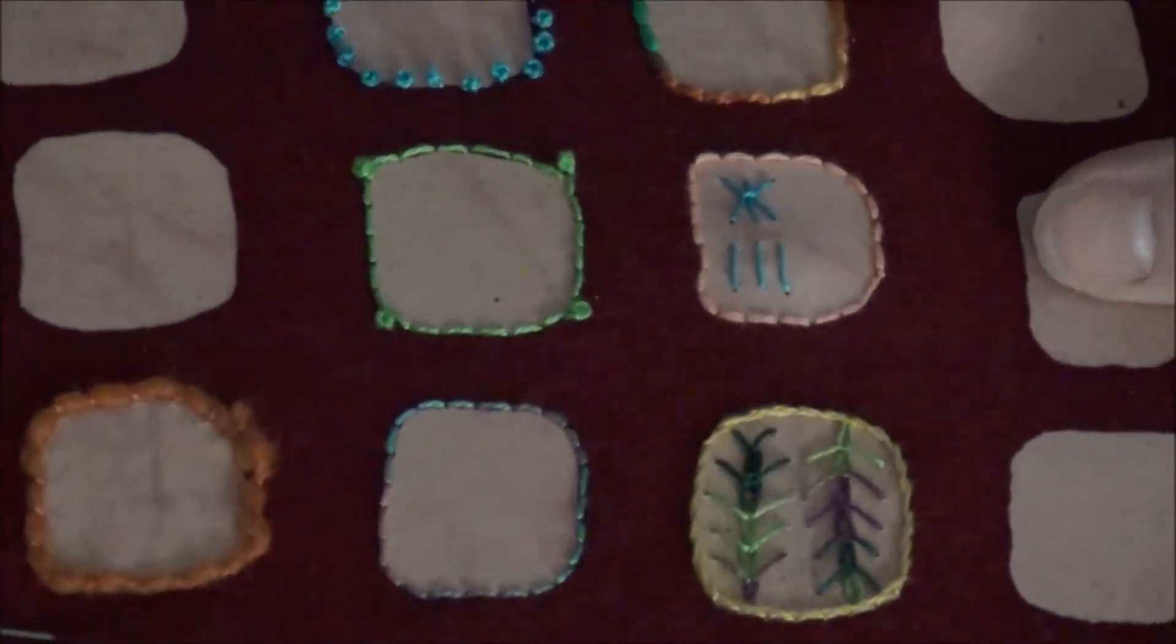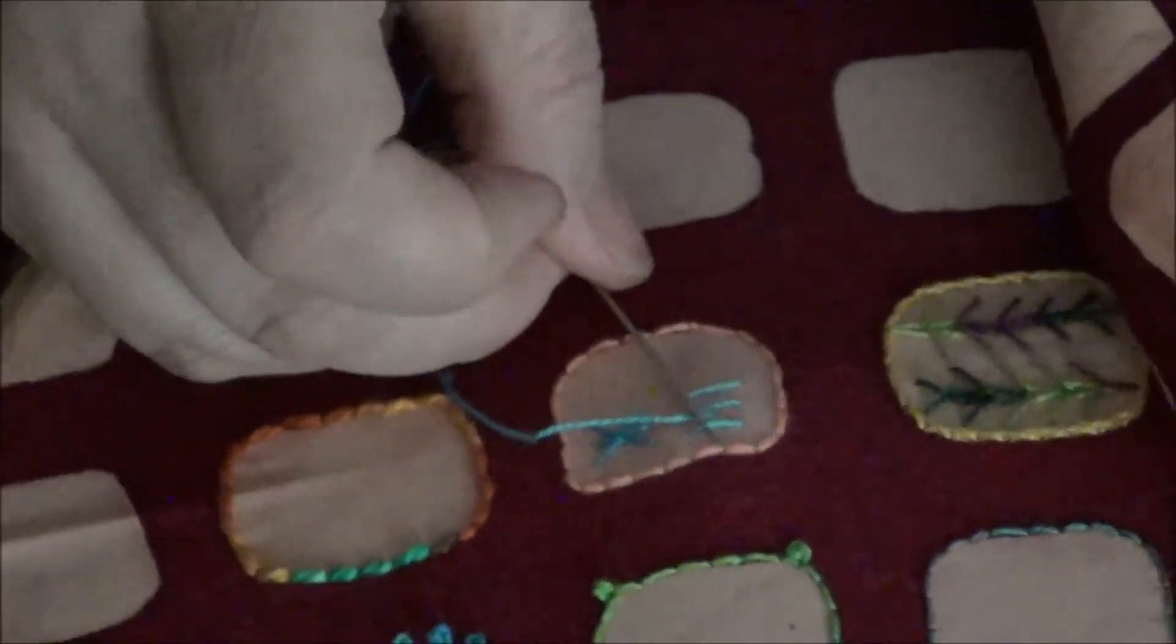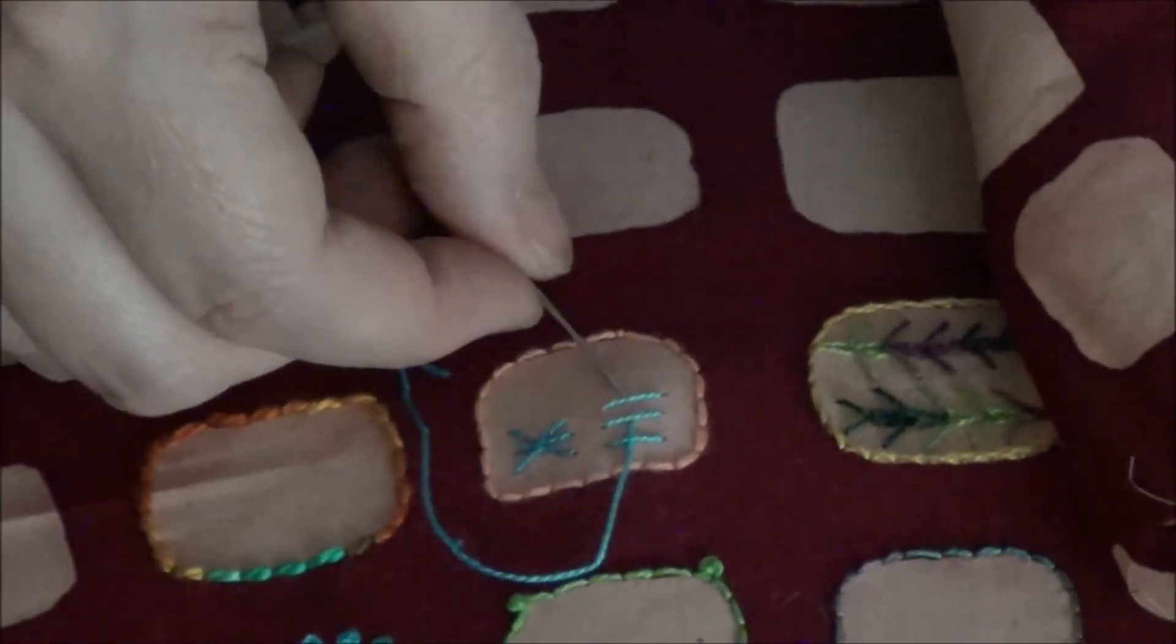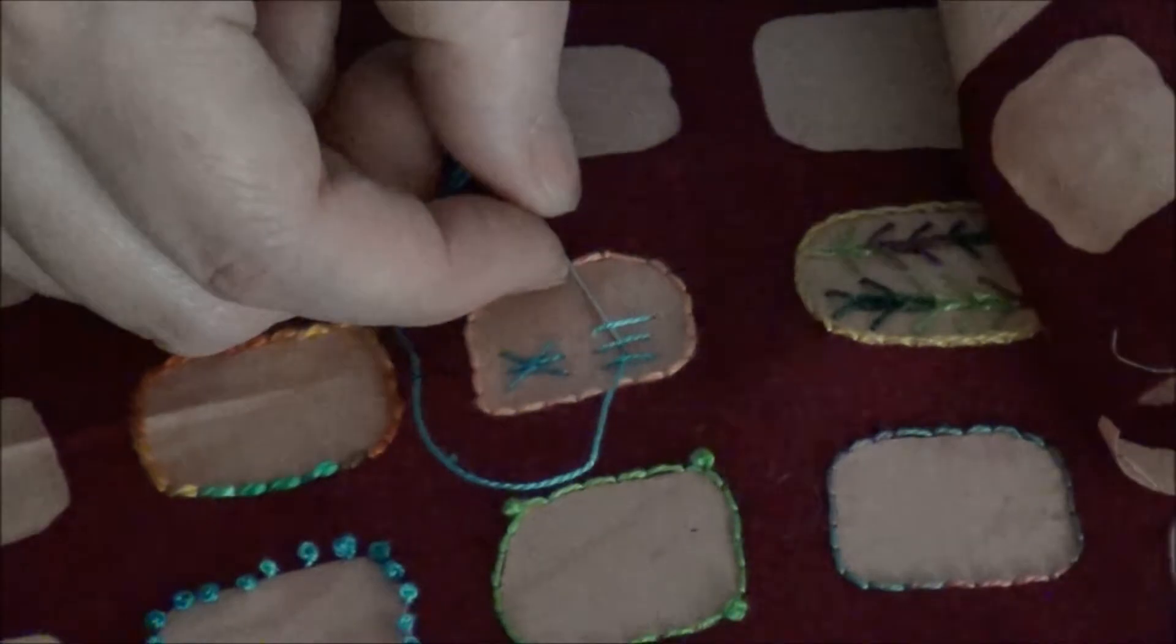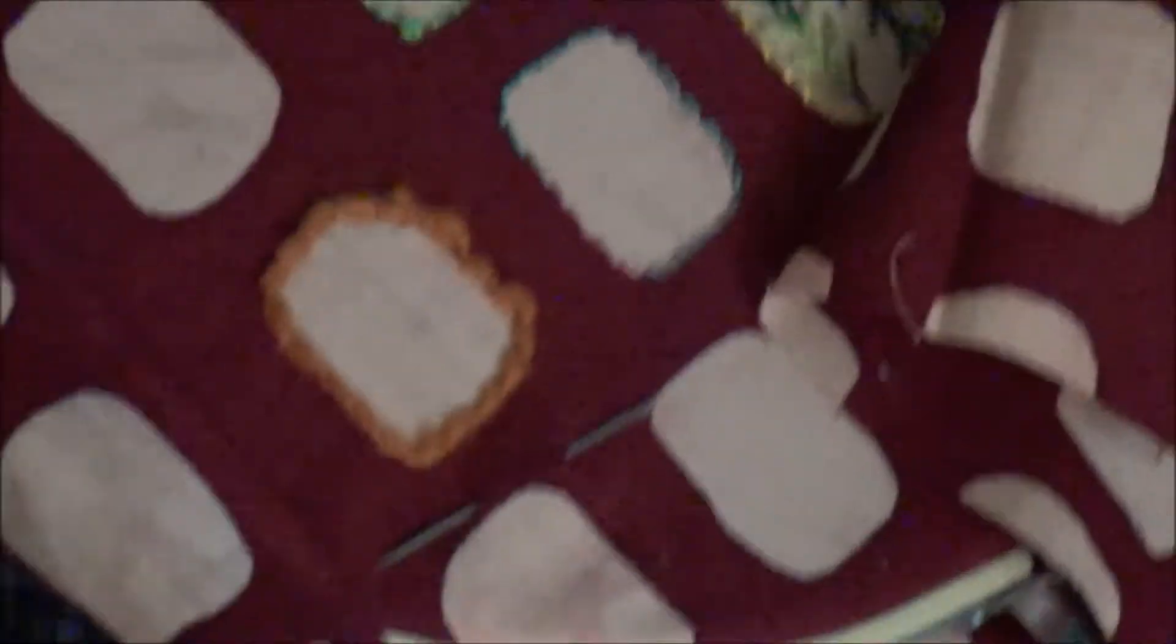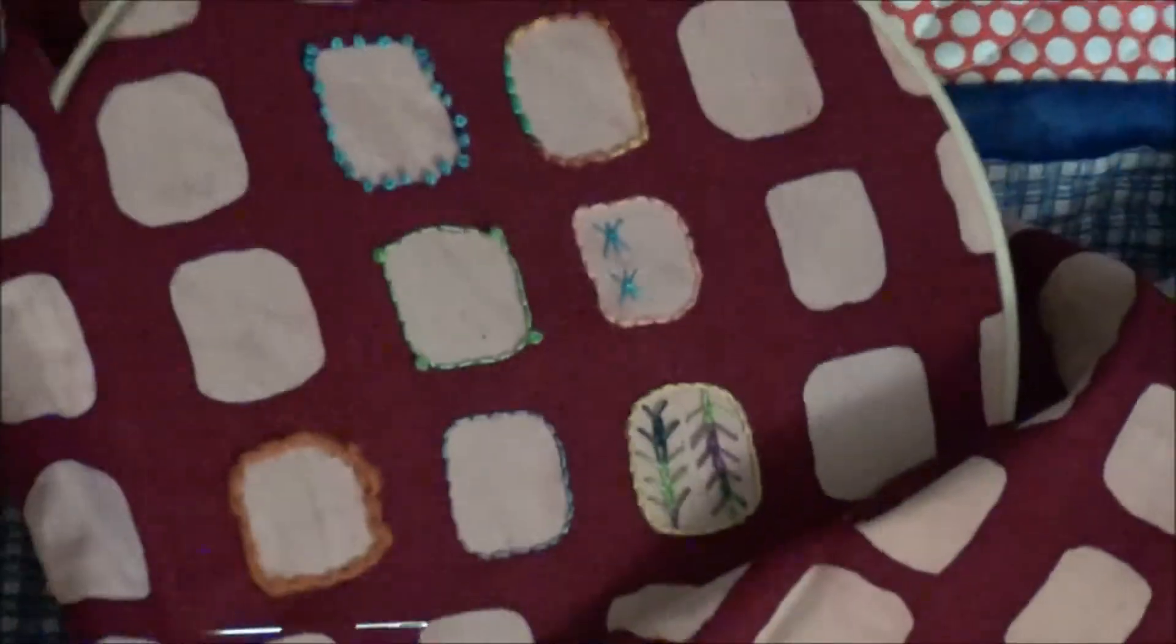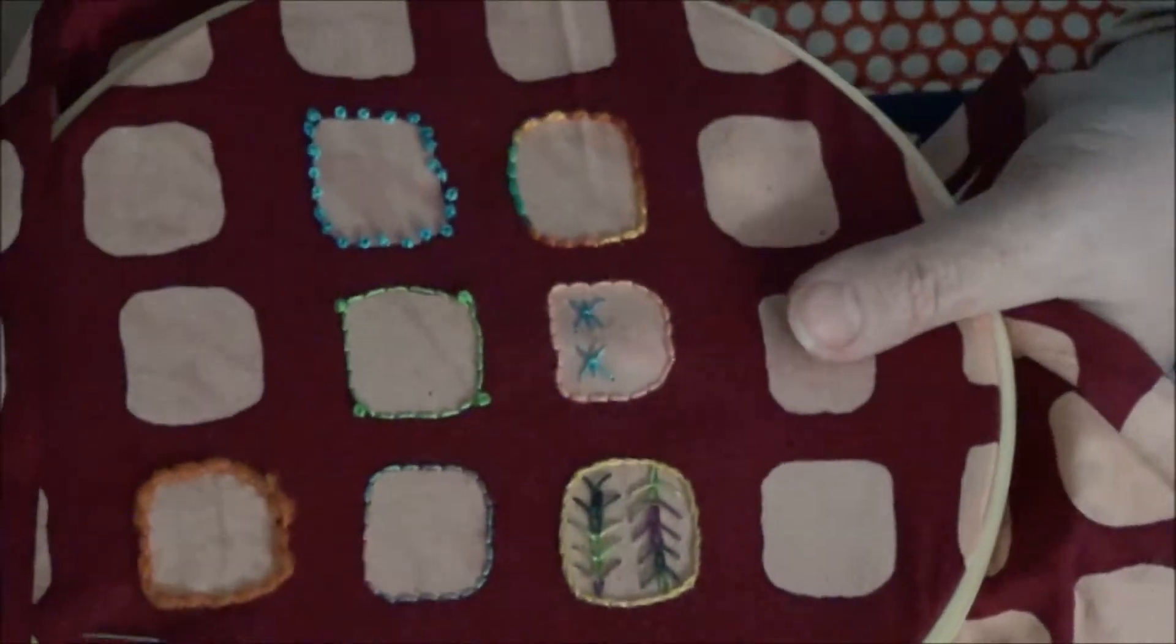And then you want to come up in the middle of that, and you want to go underneath one side. Come out underneath and go back into the same hole. So you're capturing all of those and then it squeezes them together to make this little asterisk.